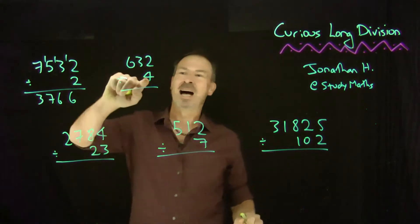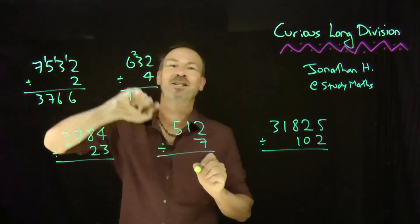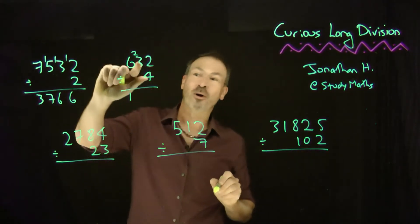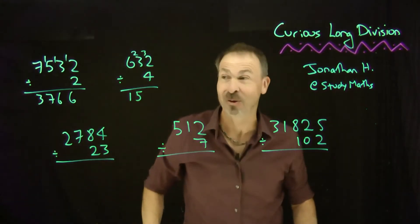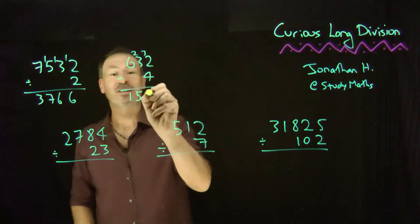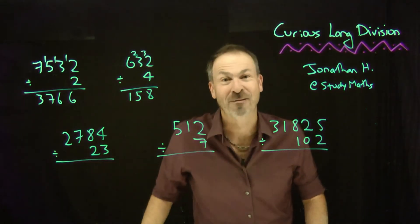Let's do another one! How many times does 4 go into 6? It goes 1 time with a remainder of 2, but read that as 23. How many times does 4 go into 23? It goes 5 times with a remainder of 3. But read that as 32. How many times does 4 go into 32? It goes 8 times. 632 divided by 4 is 158.